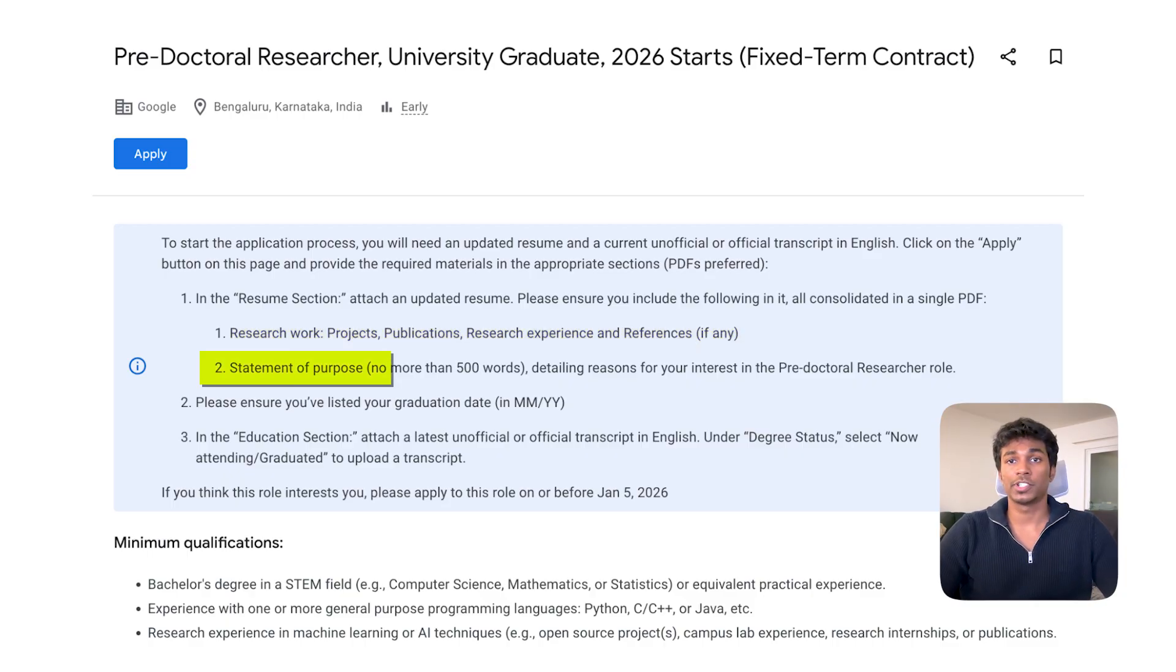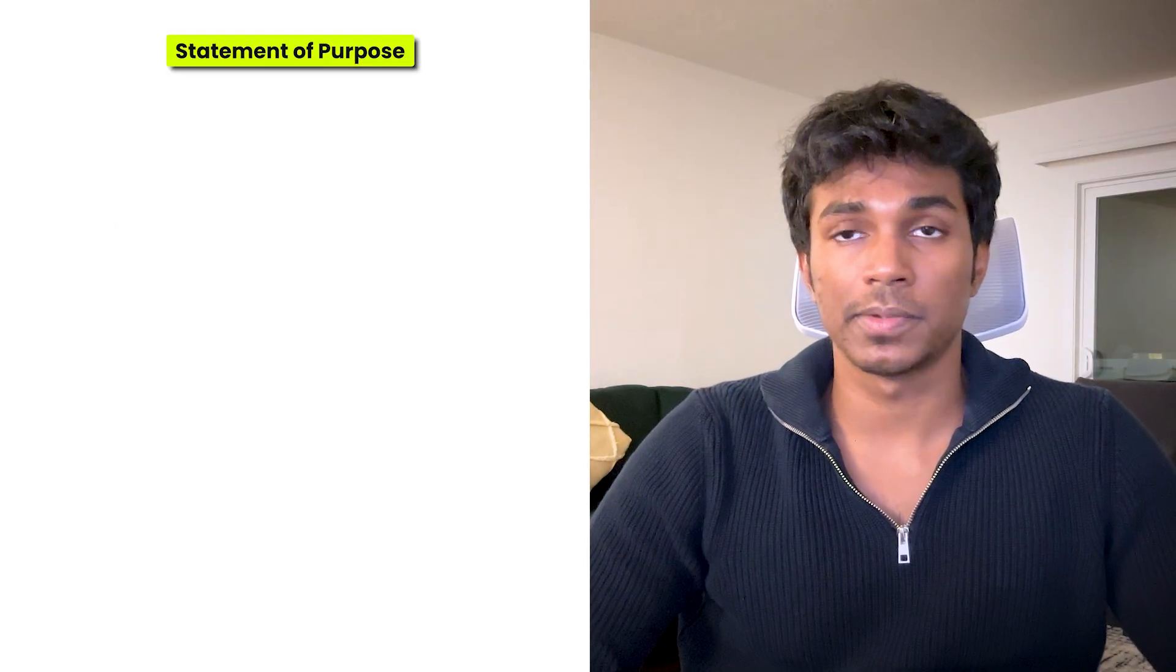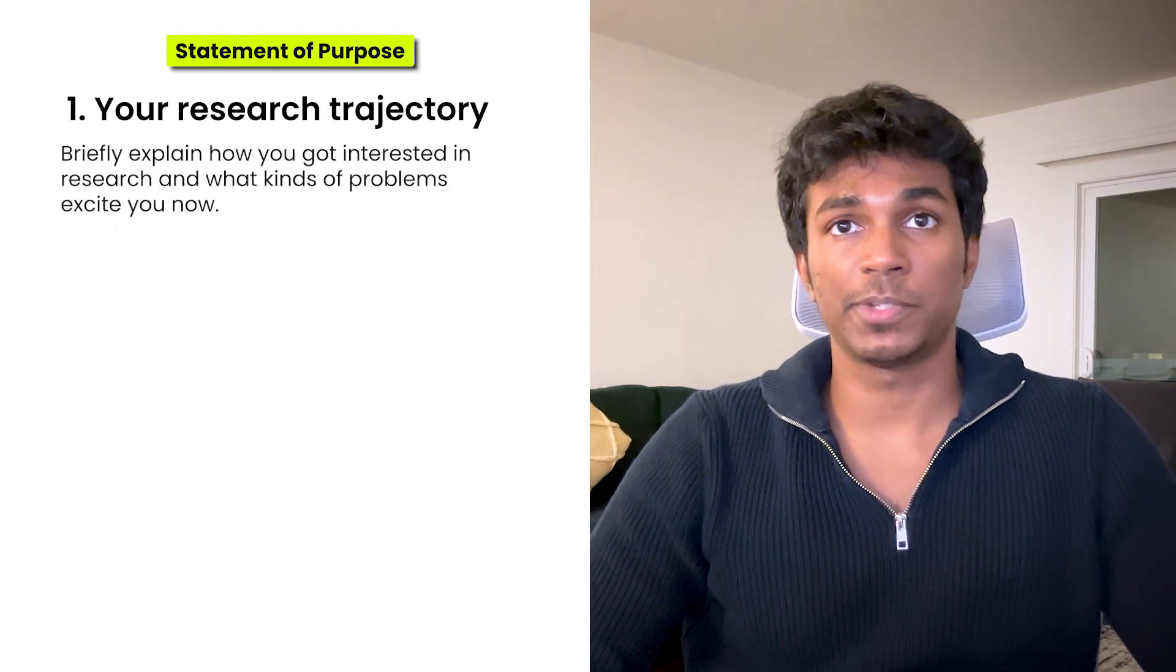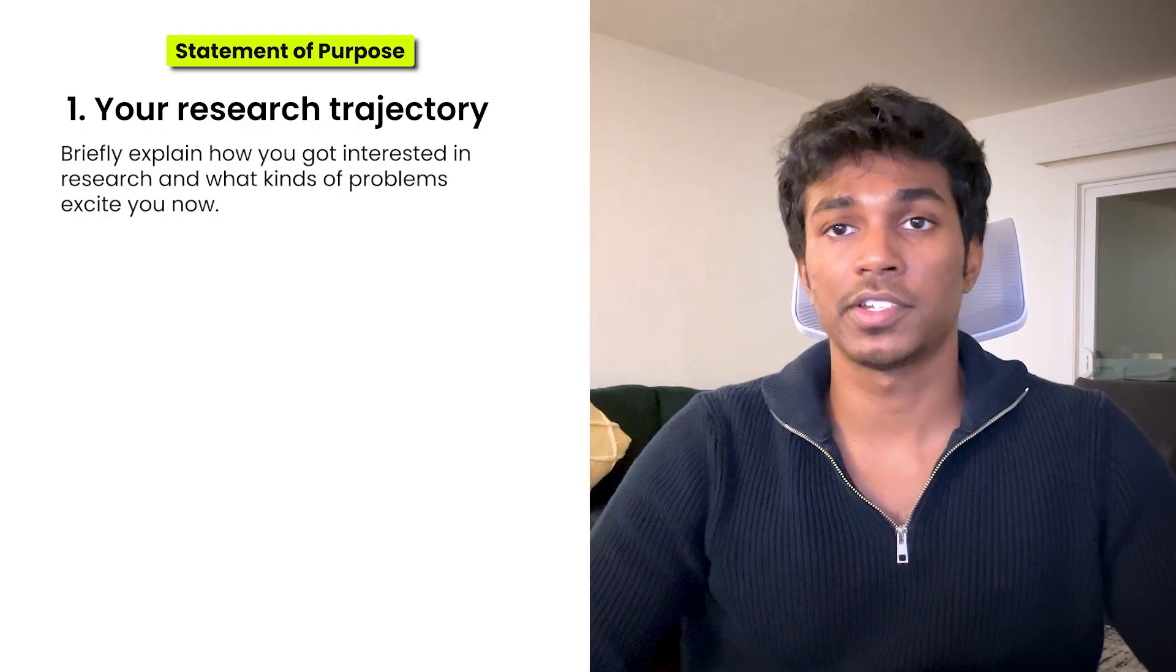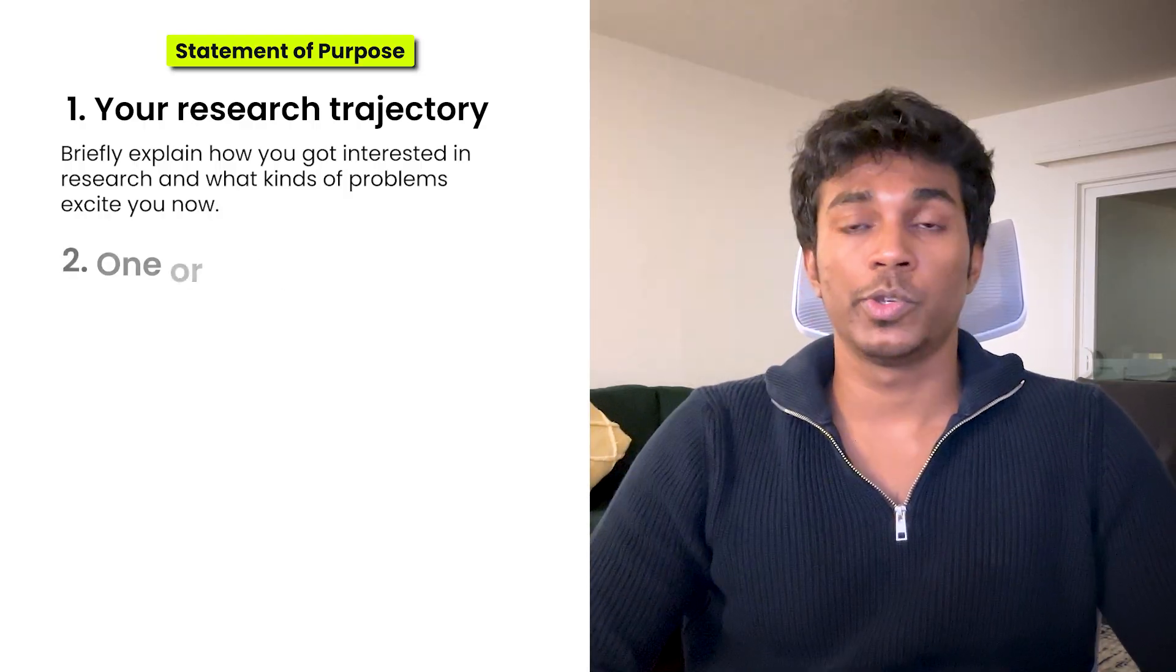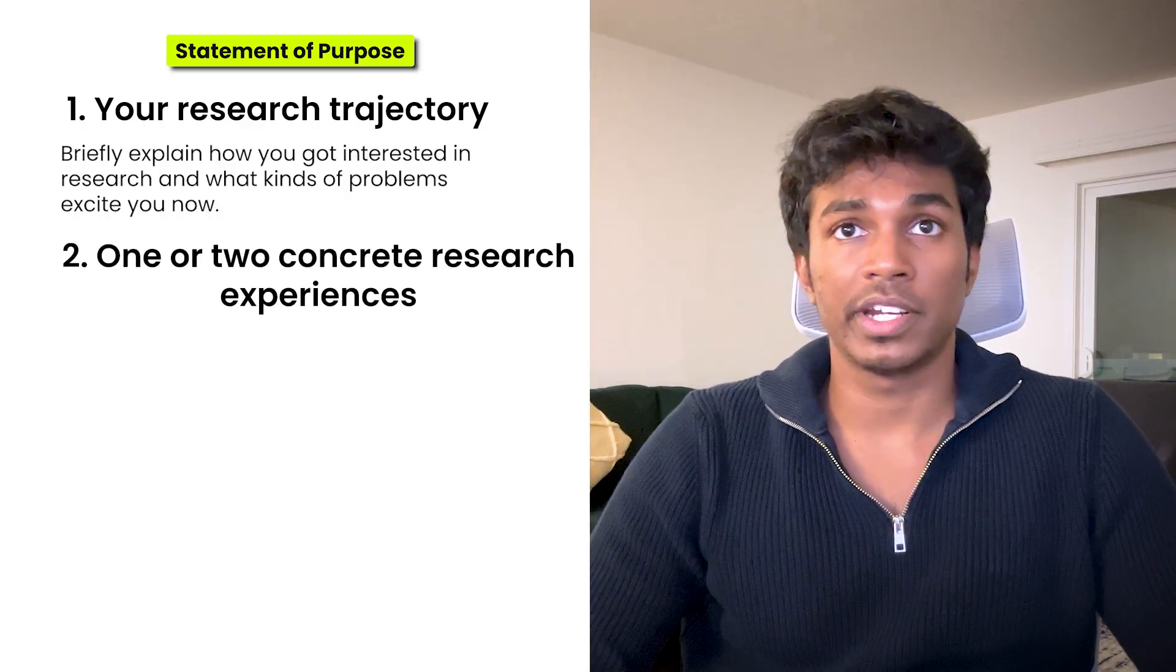It's important to highlight in this section that you're capable of doing research and you've demonstrated research experience in the past. You're also asked to submit a statement of purpose limited to 500 words. This is intentional because they want you to be crisp and they want to directly understand how you think about research. A strong SOP for me usually has four parts. Your research trajectory, where you briefly explain how you got interested in research and what kind of problems excite you now.